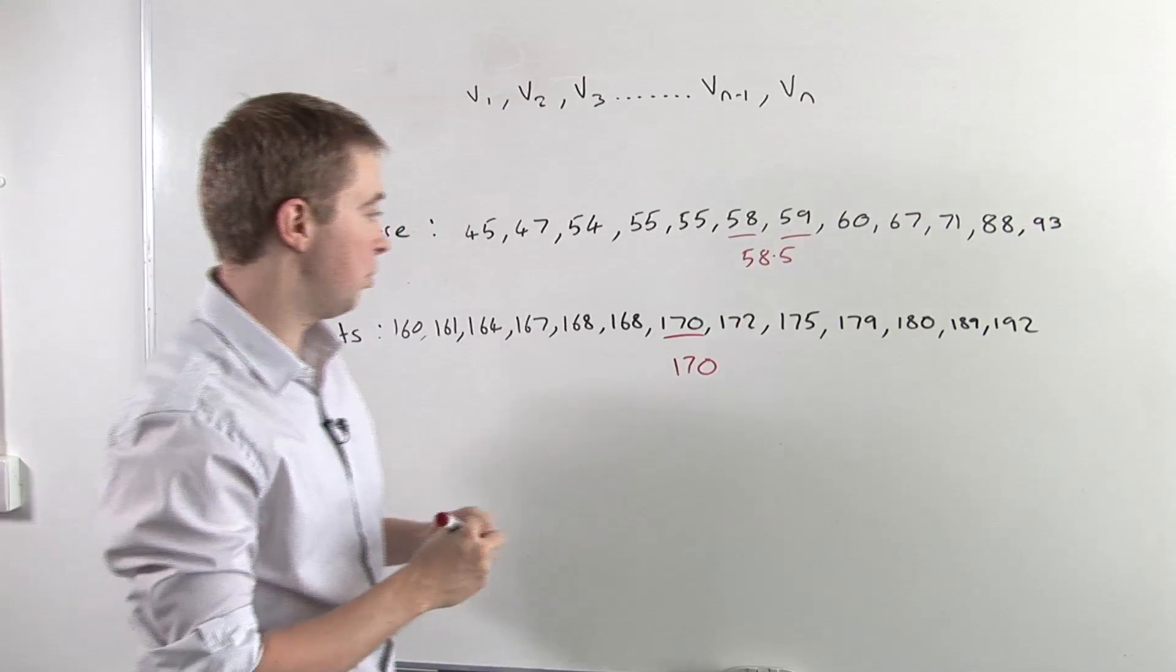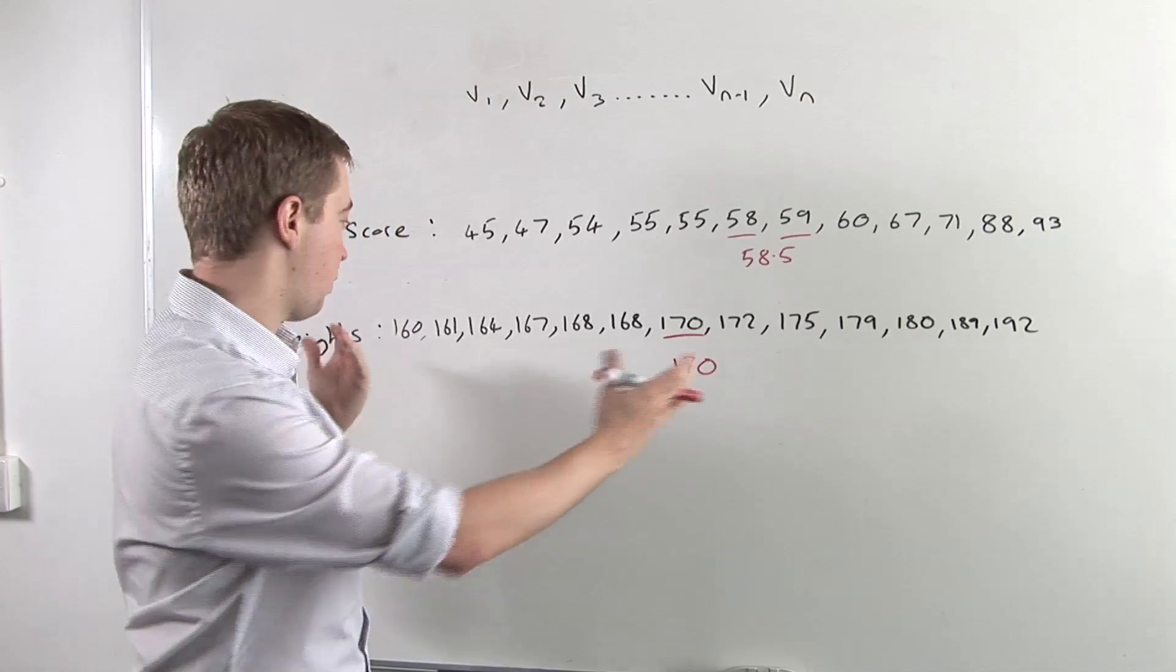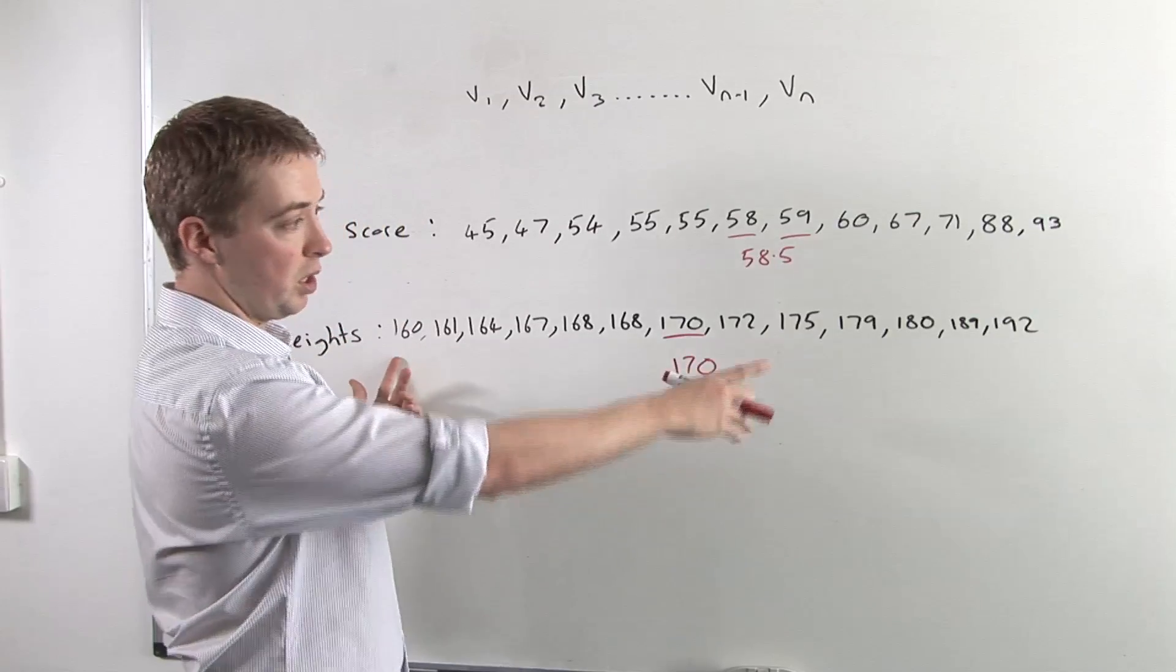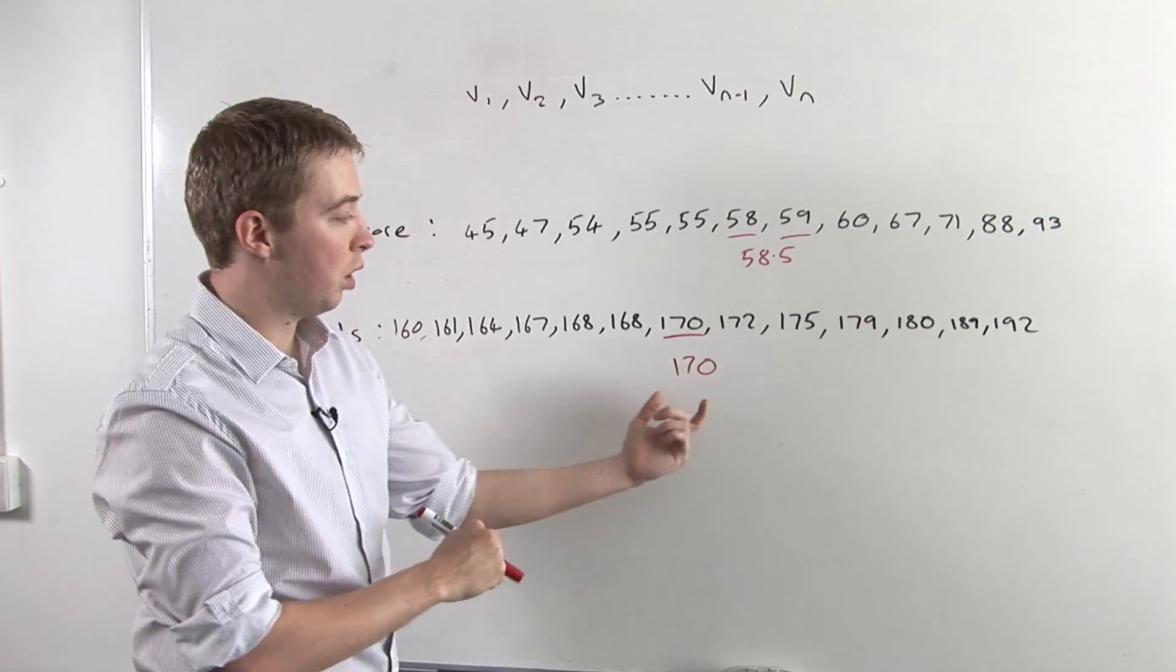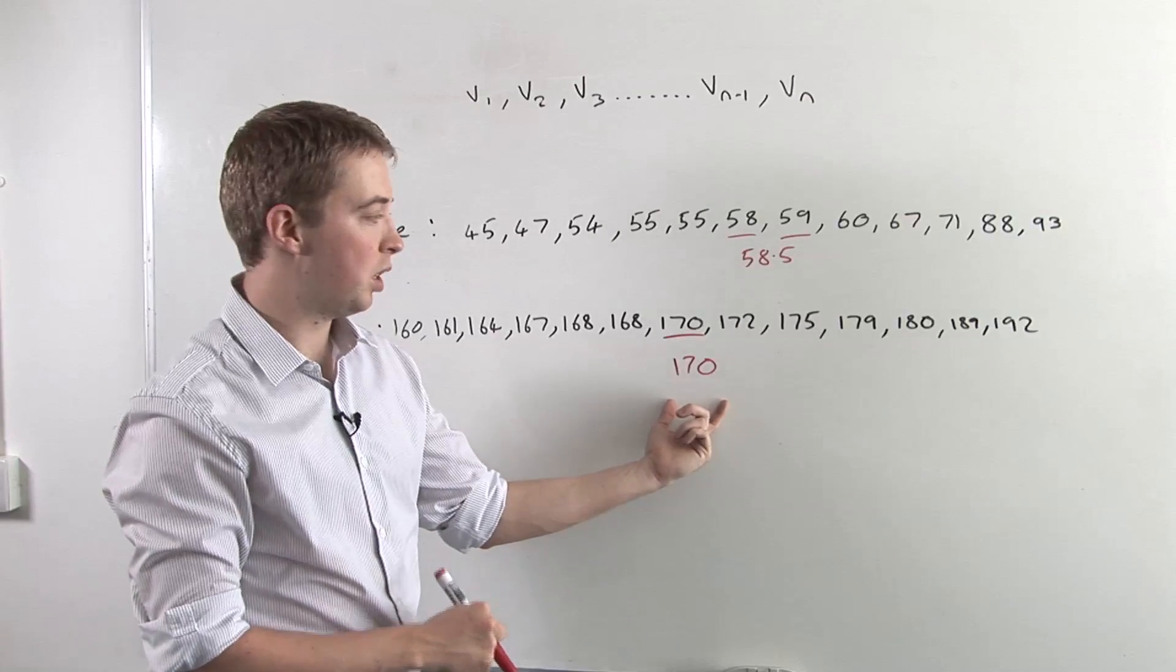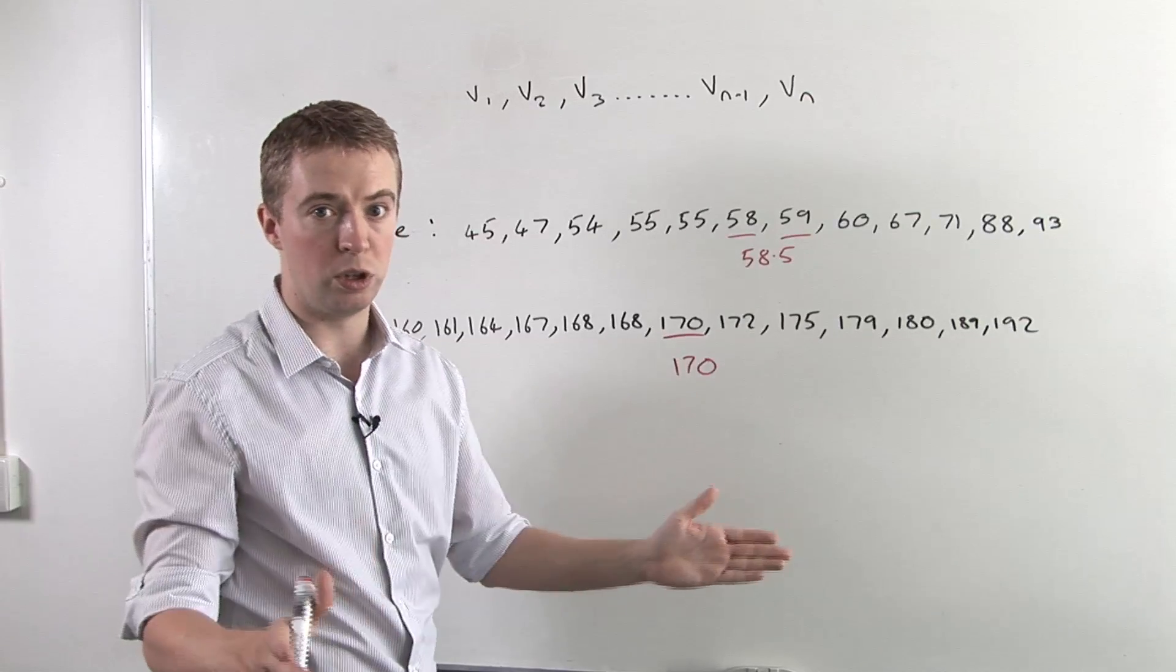It's worth pointing out that that's clearly not halfway in between 160 and 192. That's not what the median means. It's simply the middle value in an ordered set of values.